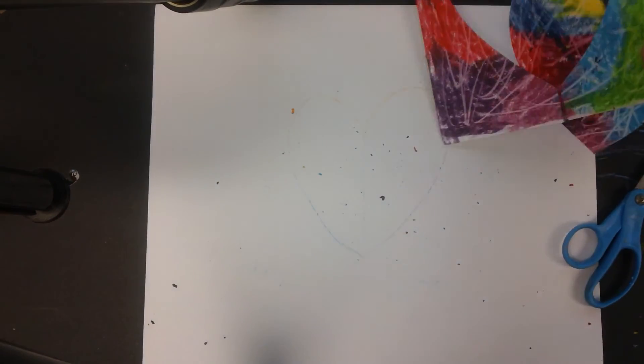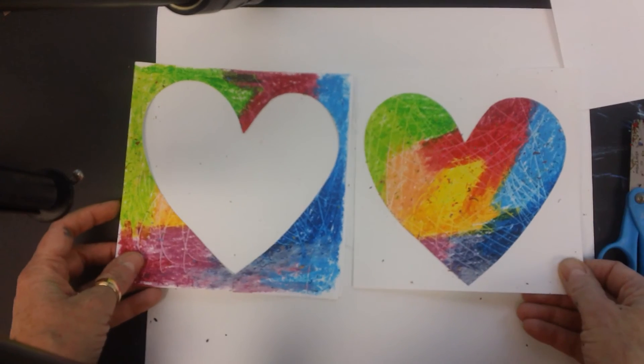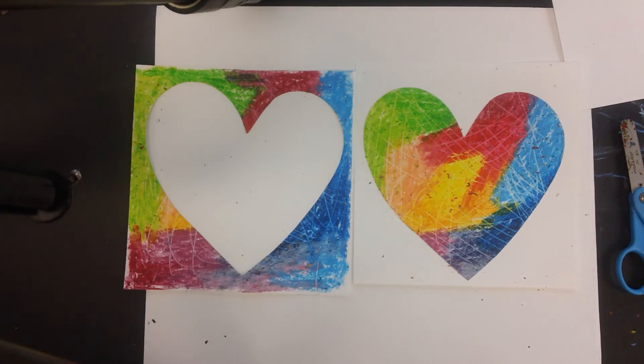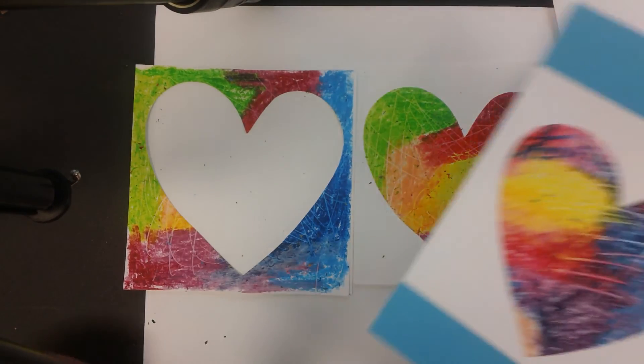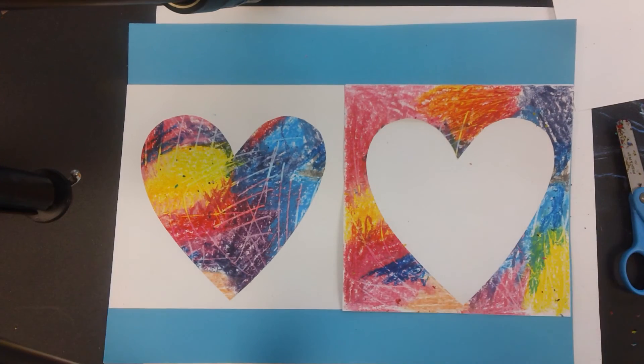So you're going to take both of these and you're going to glue it down to the other squares. Okay, just like that. And when you get that part done, you are going to glue both of them to the colored piece of paper that I have for you.